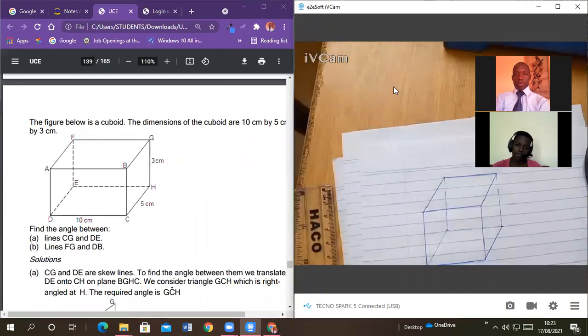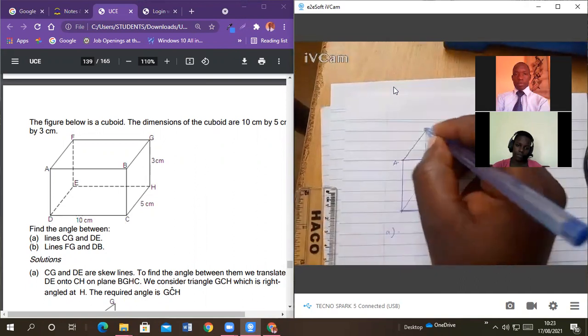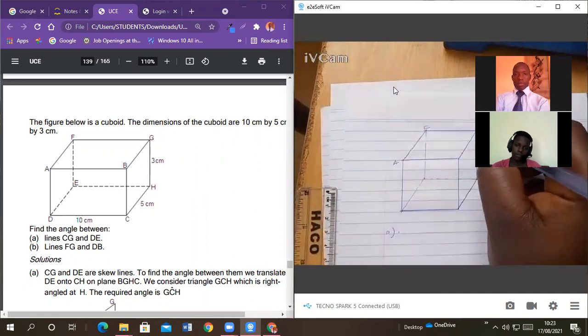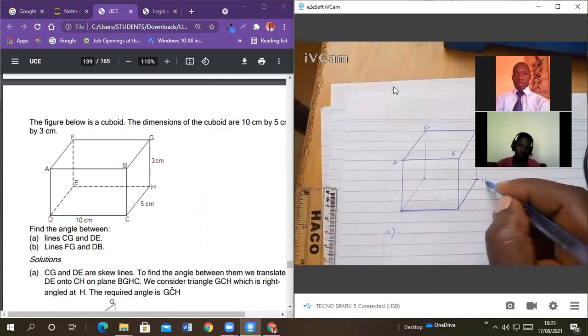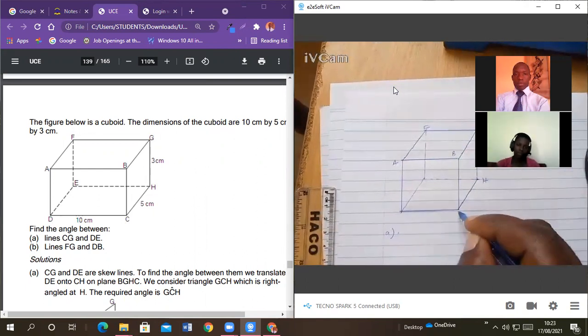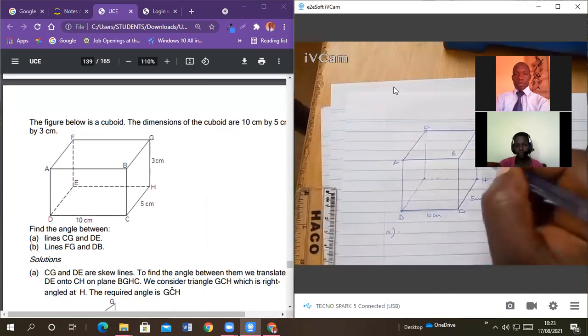So we have that diagram there, and they are saying that this is A, F, D, B, H, C, and then E. 10 centimeters, 5 centimeters, and 3 centimeters.